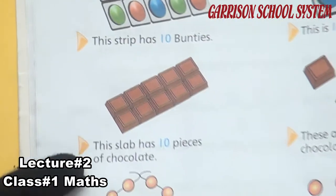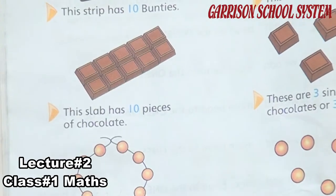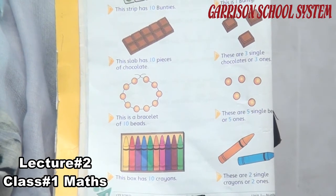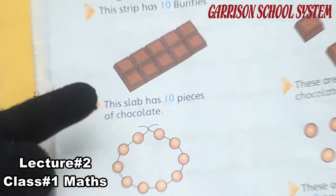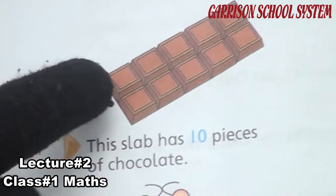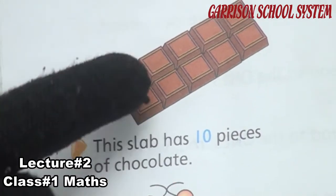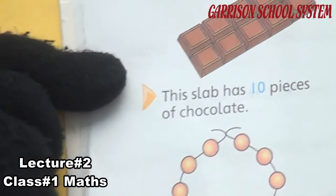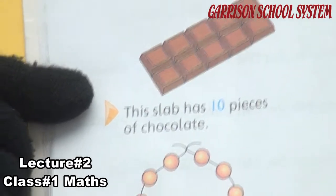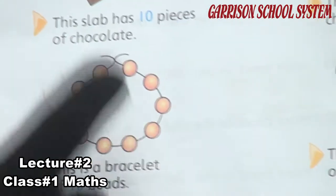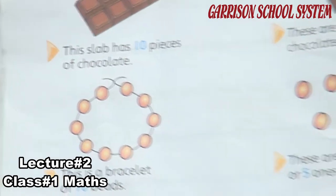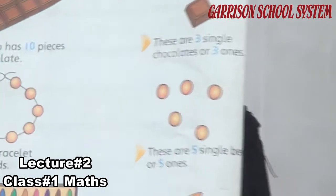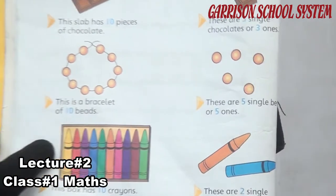Same like that, here are some more examples. These are tens examples and this line is for ones examples. Okay students, here are some chocolates of ten pieces. Let's count: one, two, three, four, five, six, seven, eight, nine, ten. How many? These slabs are ten. Look at the other side — here are two numbers and these are three single chocolates. So these are the ones example and these are the tens example.